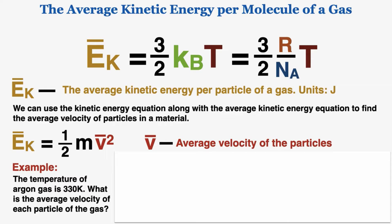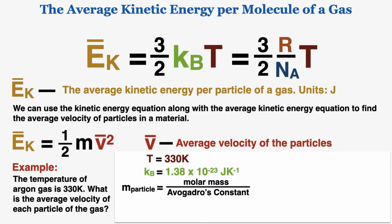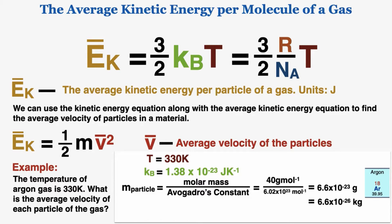As an example, the temperature of argon gas is 330 Kelvin. What is the average velocity of each particle? The mass of one particle equals the molar mass divided by Avogadro's constant. The molar mass of argon is about 40 grams per mole, found at the bottom of its symbol on the periodic table. Dividing by Avogadro's constant and converting to kilograms gives 6.6 × 10⁻²⁶ kg.